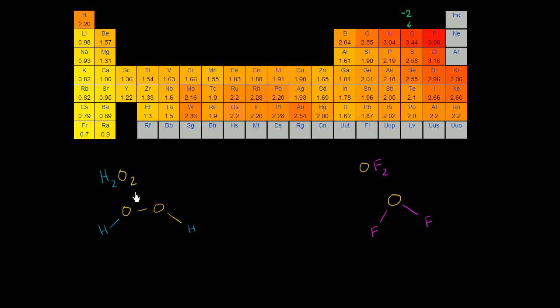But what's interesting here is that oxygen isn't purely bonded to things less electronegative than itself. In the hydrogen peroxide, yes, it is bonded to the hydrogen, but it's also bonded to another oxygen. Obviously, these two are going to be equally electronegative. So what would be the oxidation states or the oxidation numbers here?